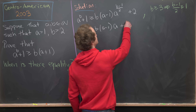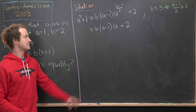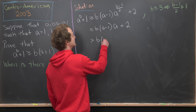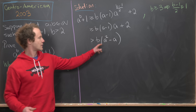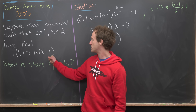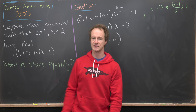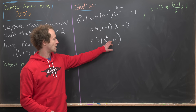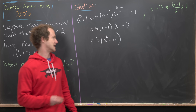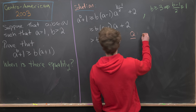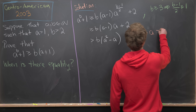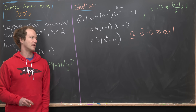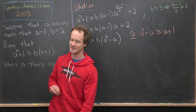We can turn this into a strict inequality by dropping the two, and multiplying A through to get strictly bigger than B times A squared minus A. It looks like we're building the right-hand side of the inequality, but there we have the linear object A plus one, whereas here we have the quadratic A squared minus A. So we need to determine when A squared minus A is bigger than or equal to A plus one.